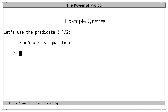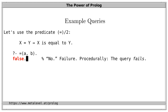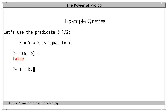We want to post a query, so we start with a question mark and a dash. We ask: is it the case that equals of a and b holds? When we post this query, we get an answer from the system — in this case, the system tells us no, this doesn't hold. This is also called failure; procedurally, we say the query fails. And since equals is defined as an infix operator, we can also write this query in operator notation as a equals b. This is only a syntactic variation, so of course this is still not the case.